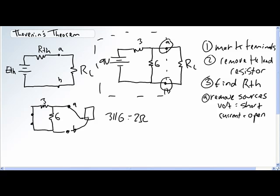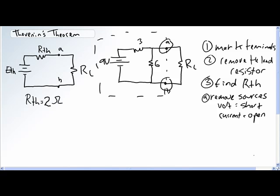That is our Thevenin equivalent resistance. Okay. So RTH is 2 ohms. And now, step 4: